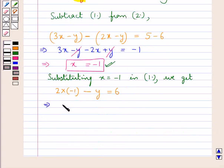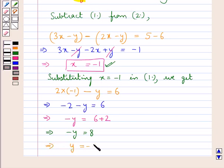This further gives us minus 2 minus y is equal to 6, that is we now have minus y is equal to 6 plus 2, or you can say we have minus y is equal to 8. This means we have y is equal to minus 8. So this is the value for y.